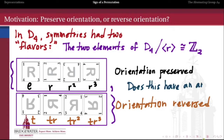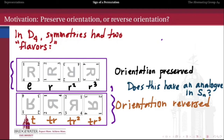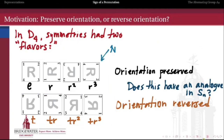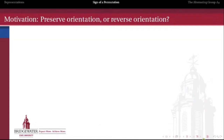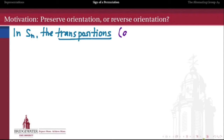Does this idea have some kind of analog in the symmetric group Sn? Can we associate to permutations on n symbols a notion of orientation-preserving or orientation-reversing? In Sn, the role of reflections are going to be played by the elements that are transpositions.